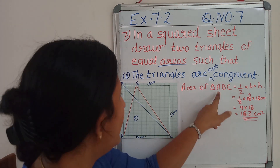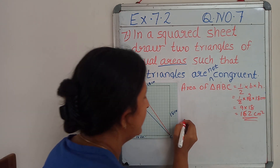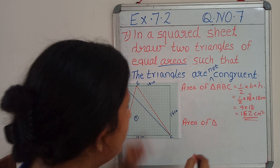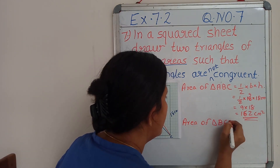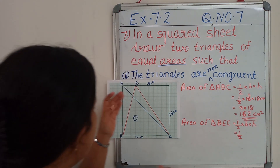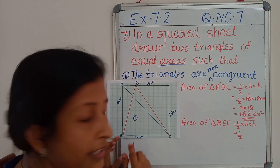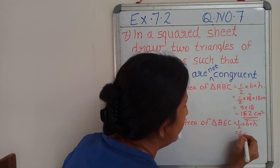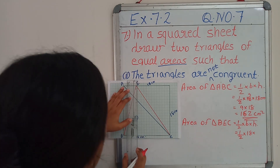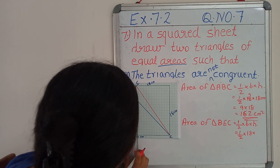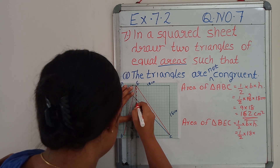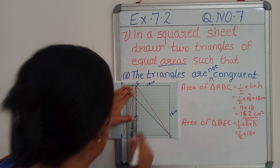Next we are going to find out the area of triangle BEC — that is our second triangle. Area of triangle BEC equals, again same formula, half the base into height. What is the base of triangle BEC? BEC itself is the base, so 18 is its value. And what is the height of this triangle? If I am keeping the triangle like this over this, this line gives you the height of this triangle.